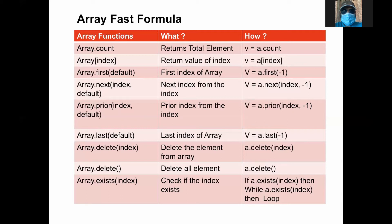In fast formula there's nothing called null, so you give a default value. If 'first' is not there — basically there's no array, it doesn't have any element — then 'first' will return that default value; here I'm using minus one. The assumption is that the array is indexed by numbers. In fast formula the array can be indexed by different things, but for now we assume it's indexed by numbers. So we use minus one as a default value — if there's nothing, minus one is returned, meaning there's no valid value.